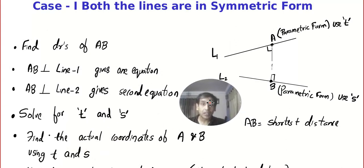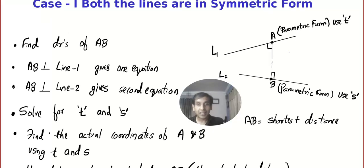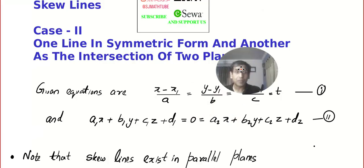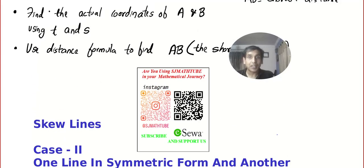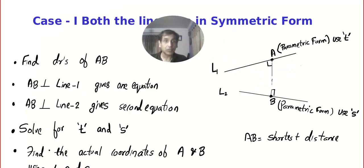You can take a print screen. This is Case 1 — just like in coplanar lines, Case 1 is where both lines are given in symmetric form. Case 2 is where one is in symmetric form and the other is given as the intersection of two planes. The method goes like this: take Line 1 and convert it into parametric form.